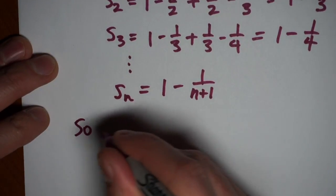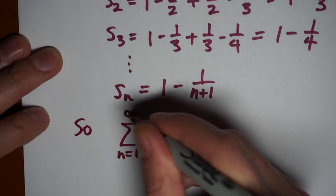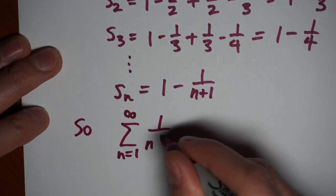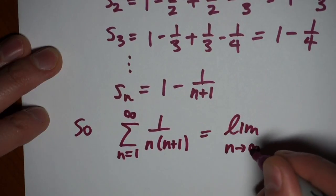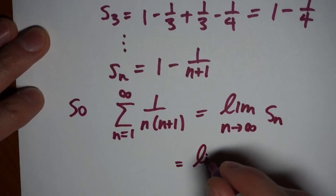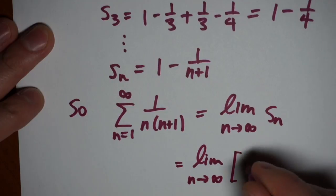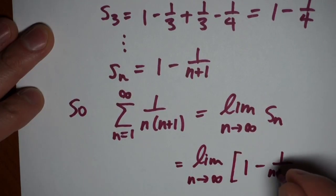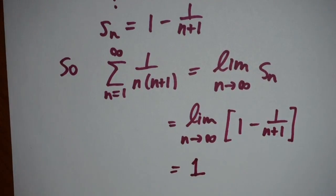And so if I want to know the series itself from n equals one to infinity of one over n times n plus one, this is the same as the limit of the partial sums. And either way that you write the partial sums, what we see is that this limit is going to be the limit of one over one minus, or one minus one over n plus one, which is just going to be one. So we would say that the sum from one to infinity of one over n times n plus one is equal to one.